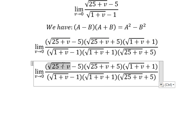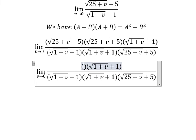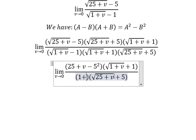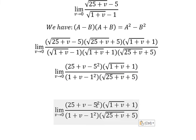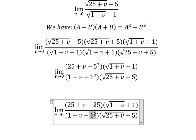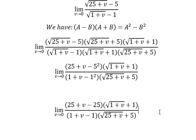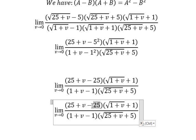So this one, we will have 25 plus v minus 5 squared. This one, that's 1 plus v minus 1 squared. And this one, you get 25. This one, you get 1. 25 minus 25, you get 0. 1 minus 1, you get 0.